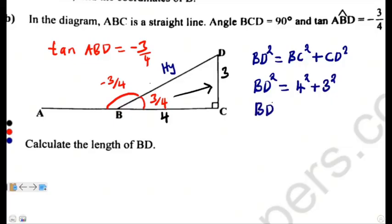So, we just need to add where we say BD squared is equal to 16 plus 9. This will give us 25.